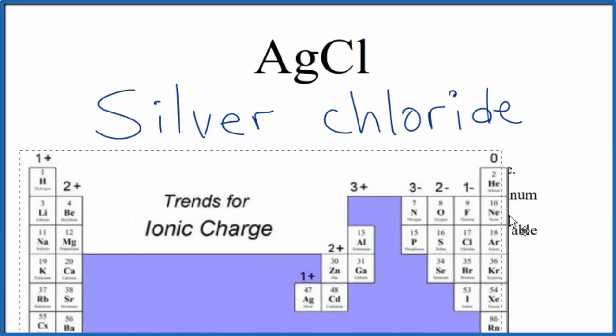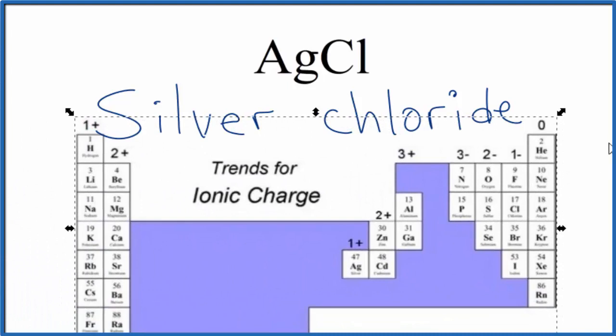You might note, if you look at the periodic table, silver, that's a transition metal right here. Silver forms compounds with 1+ ionic charge. So because of that, even though it's a transition metal, you don't need to write the Roman numeral one here for silver. You just call it silver chloride.